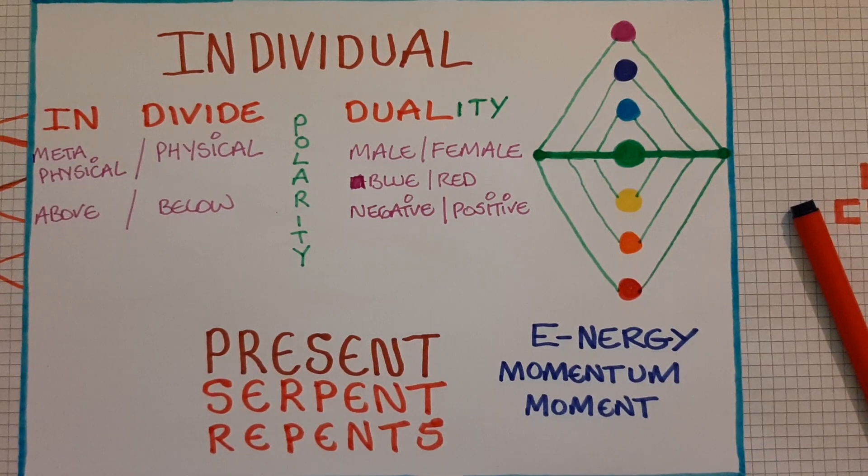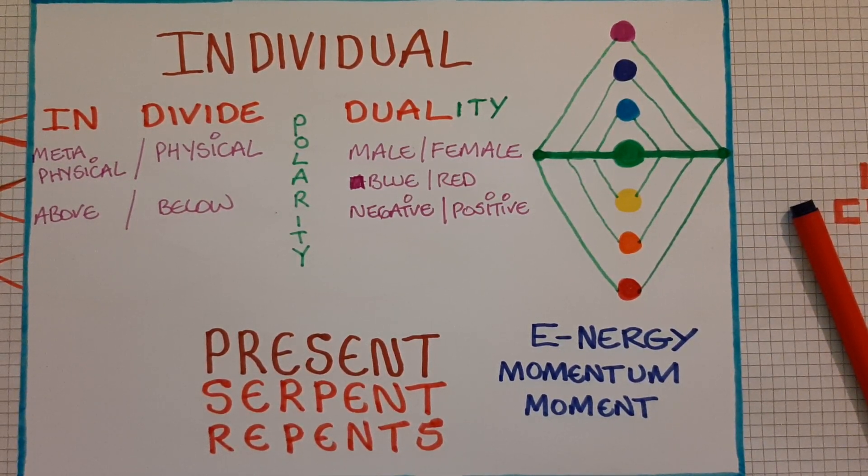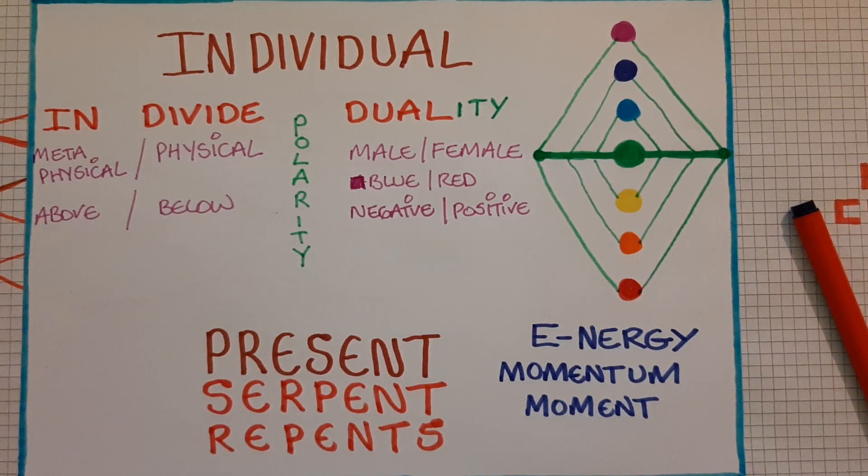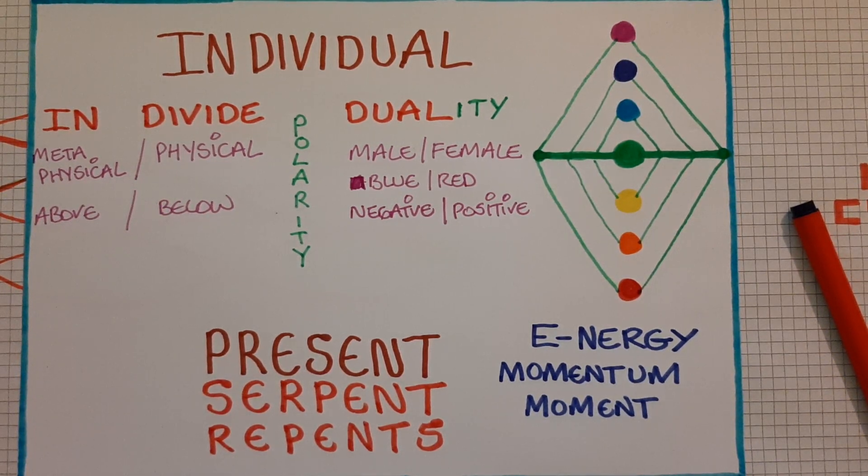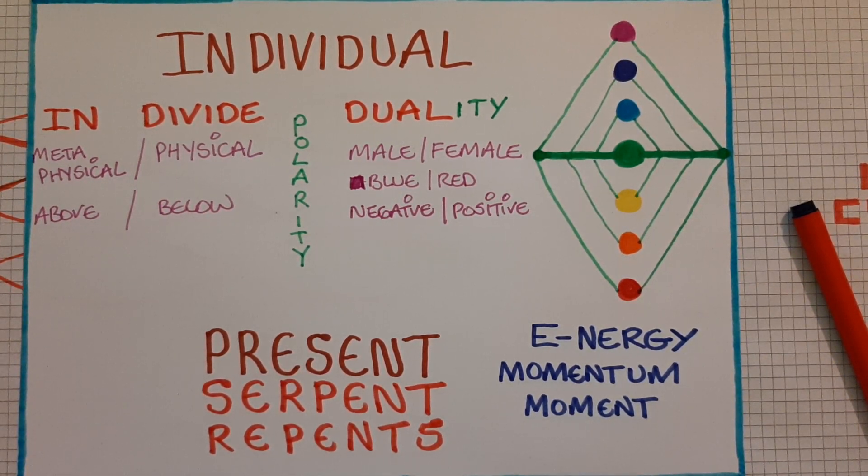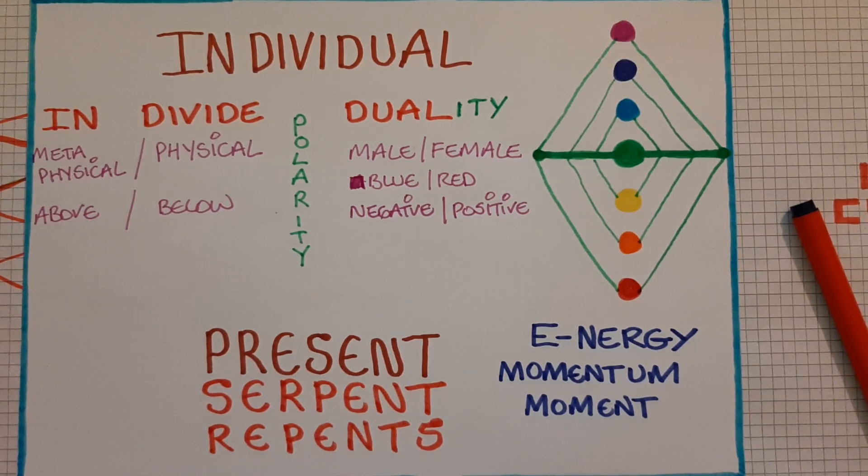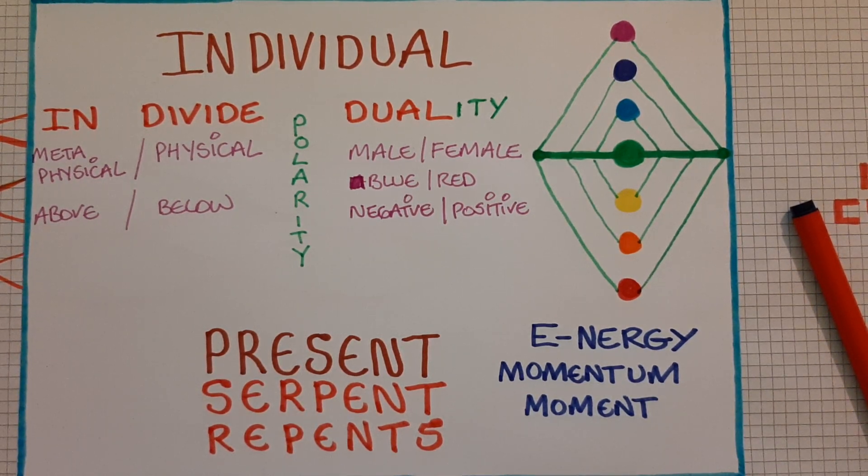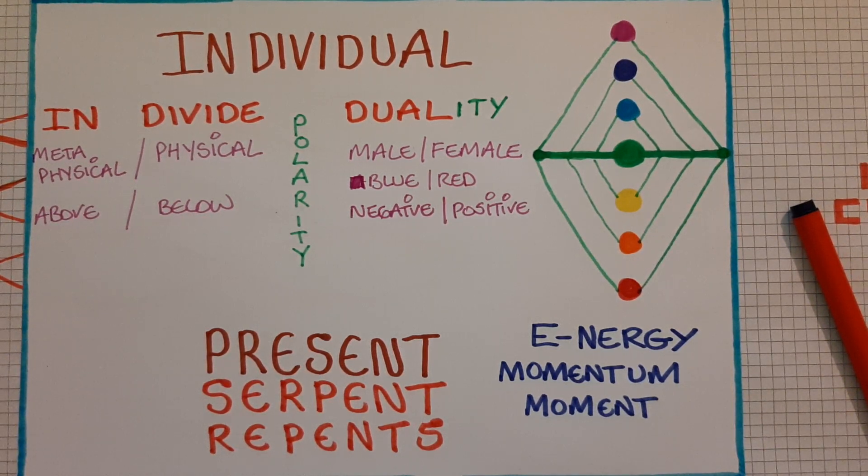Hey hello peeps, I want to look at us as individuals and how we can find polarity in this dualistic realm. Individe really means that we're in a physical realm and our other half is in the metaphysical realm. As above so below, this is how I see it.